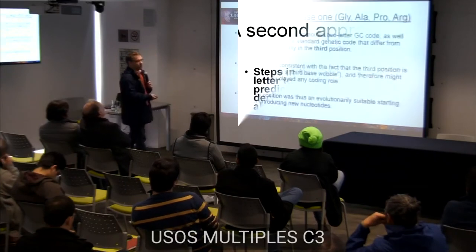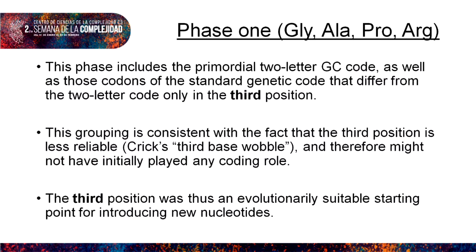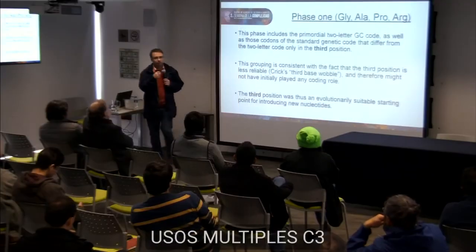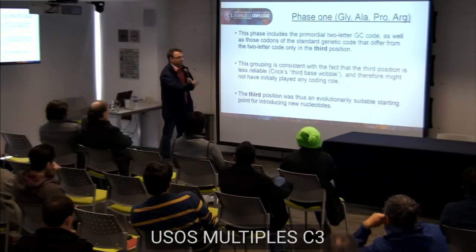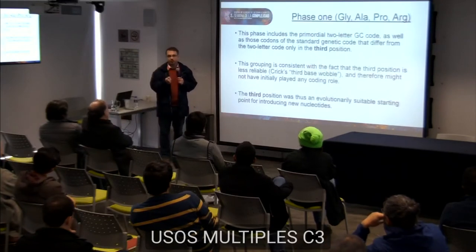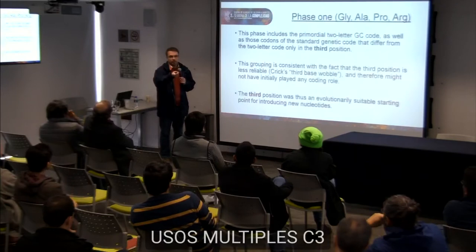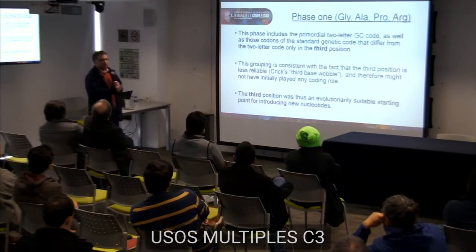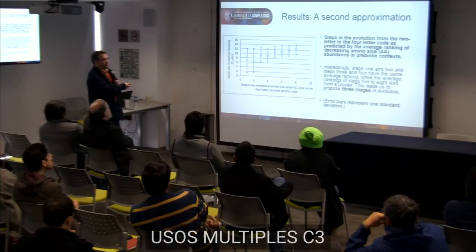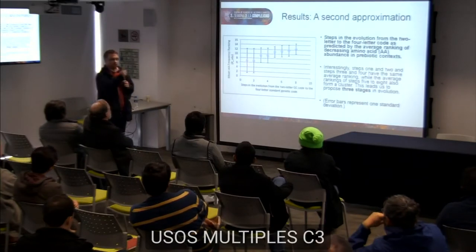Phase one includes the primordial two-letter GC code plus those codons of the standard genetic code differing from the two-letter code only in the third position. This makes sense because the third letter always had the least weight in coding — it's the most suitable place for introducing new letters, since everything is coded such that it doesn't depend on the third position. Changing the third position by adding new letters is essentially a neutral change.